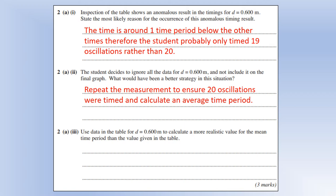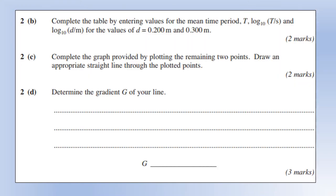So use data in the table and calculate a more realistic value for the mean time period. So in terms of calculating it, I can't go and repeat the experiment, so I'm just going to use the two measurements that we think have gone correctly. Find the average of those two divided by 20 gives us the time period or the average time period.